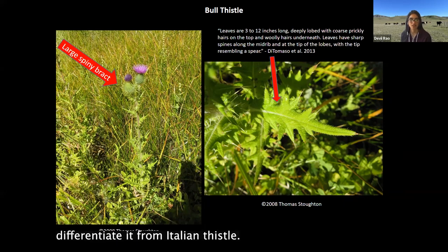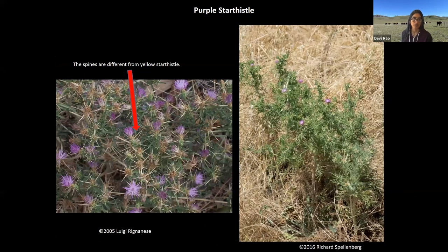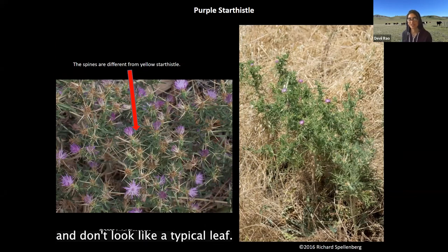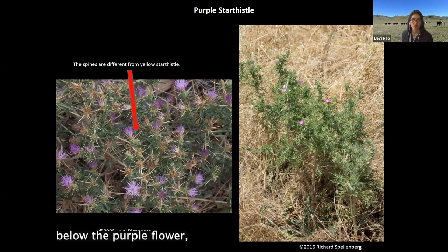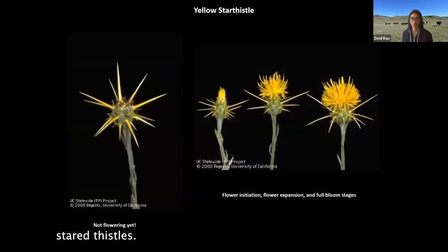Purple star thistle has narrow leaves that don't look like a typical thistle leaf, and below the purple flower it has thick, substantial spines. Those are the four common purple-flowered thistles.